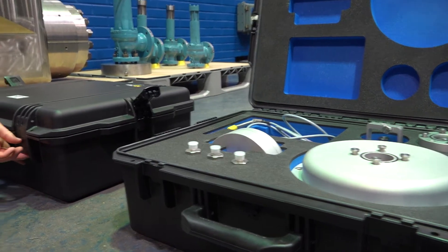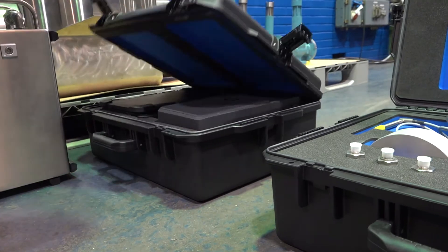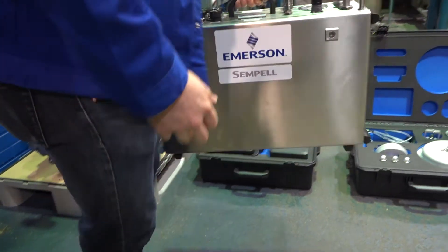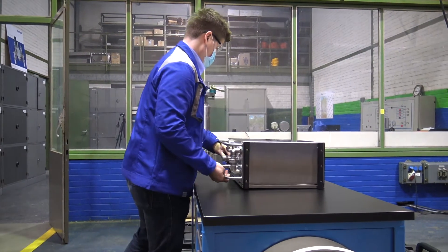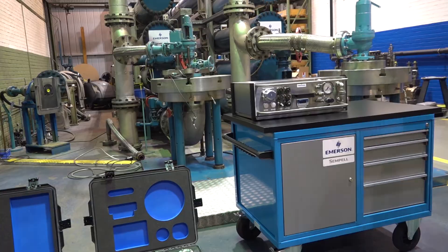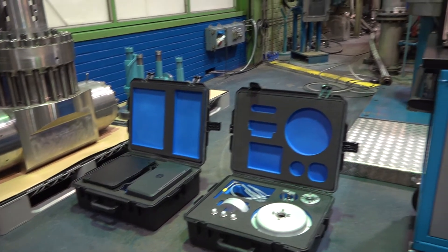In addition to the measuring equipment case, there are three more cases. The first case contains the pneumatic lifting devices and the relevant sensors. The second case contains a laptop and the third case contains all the necessary cables and hoses. The cases are light enough to be carried comfortably by two persons.